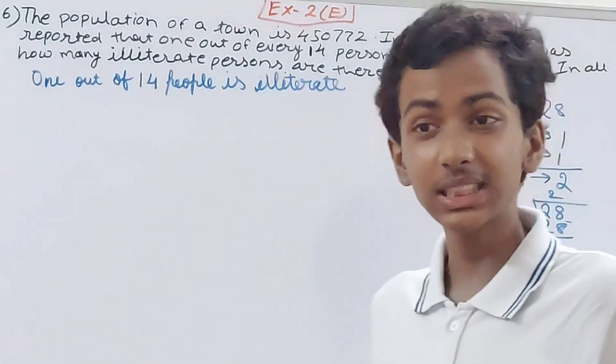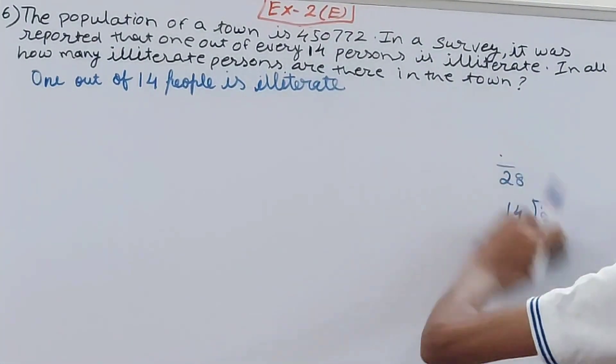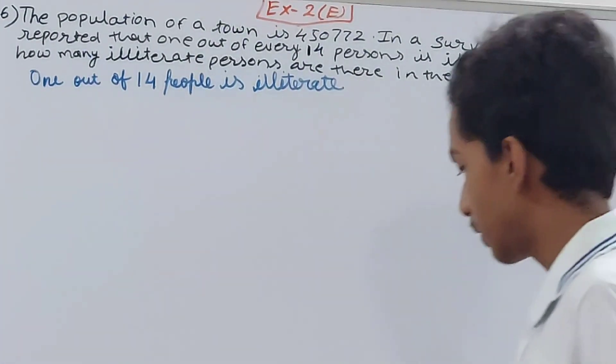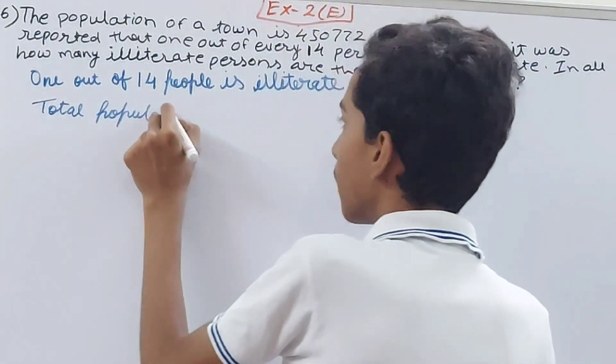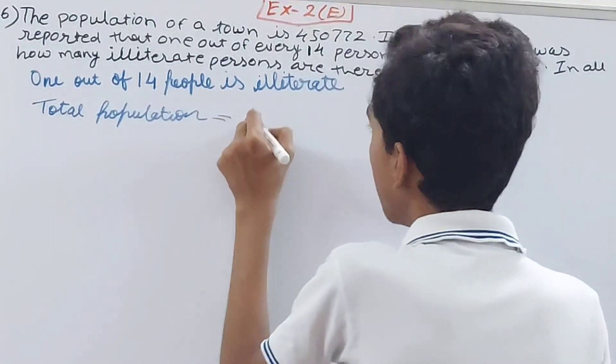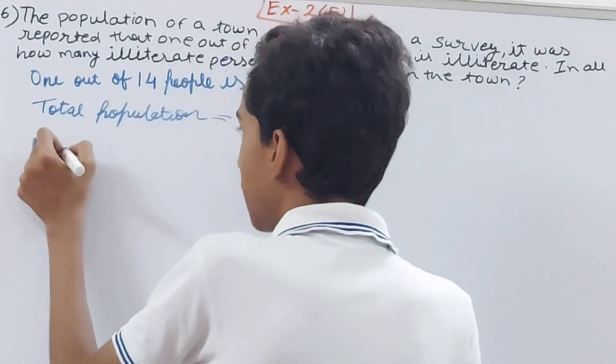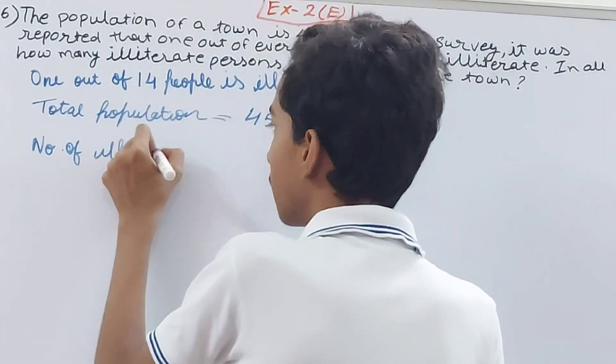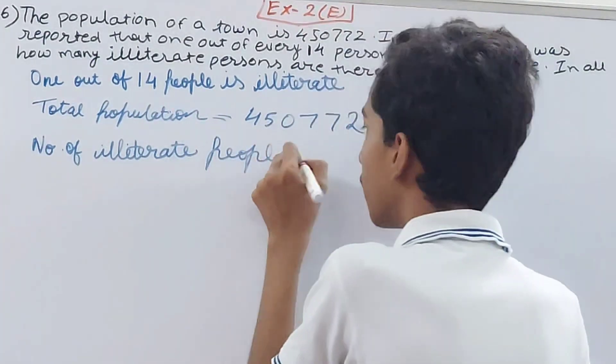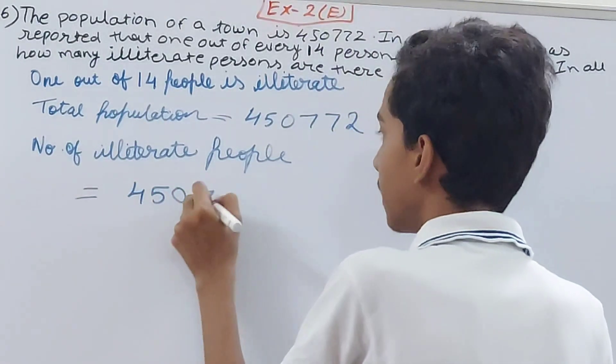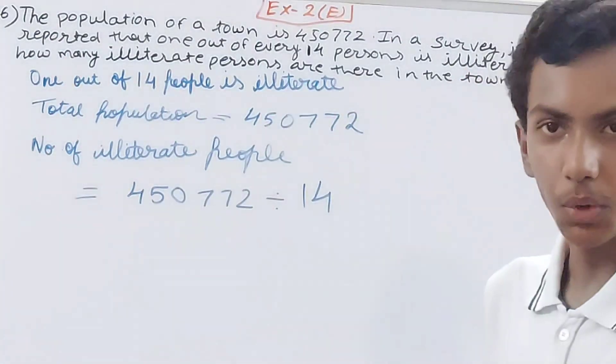So let's do that. Total population is 450,772. And now let's see, the number of illiterate people will become 450,772 divided by 14. Let's do that and see what answer we get here.